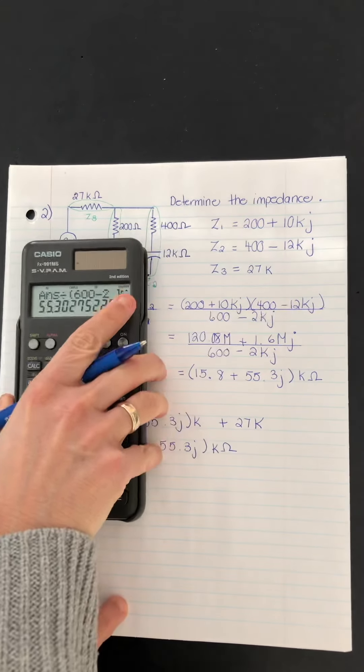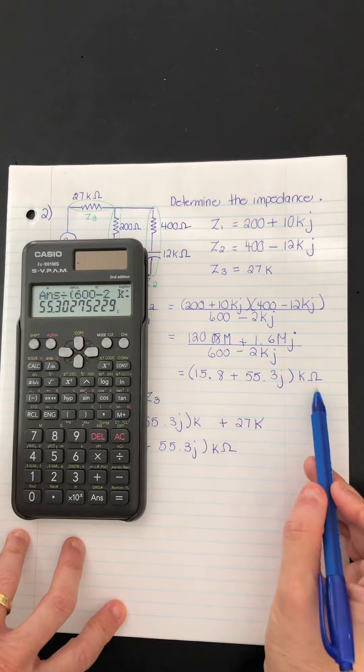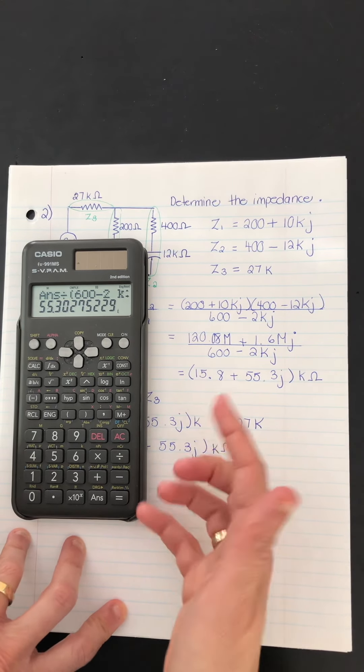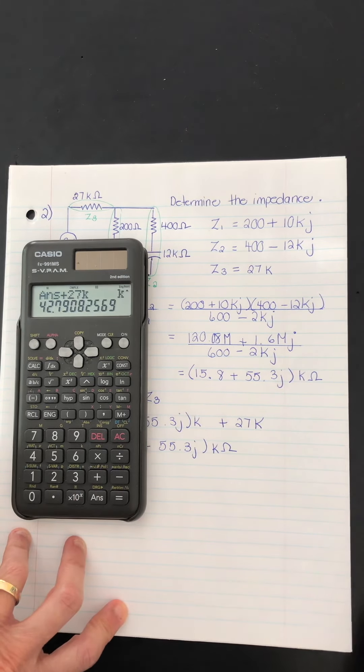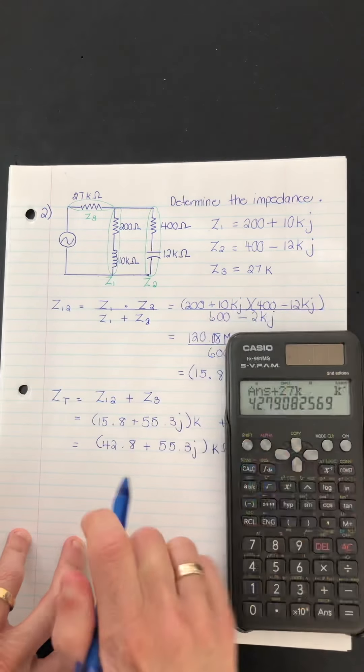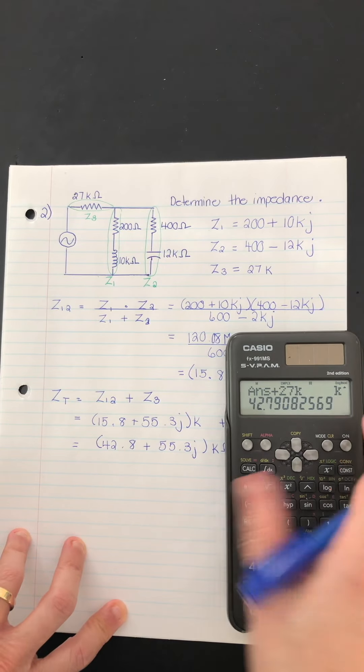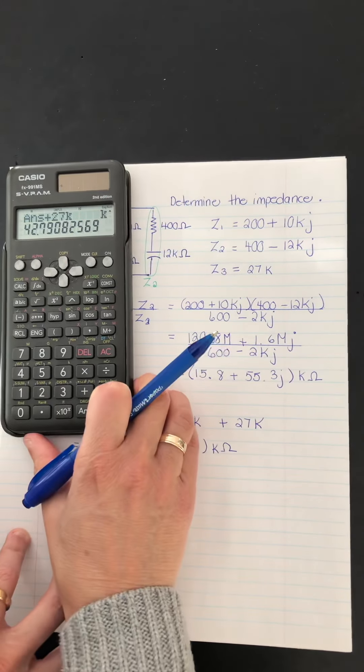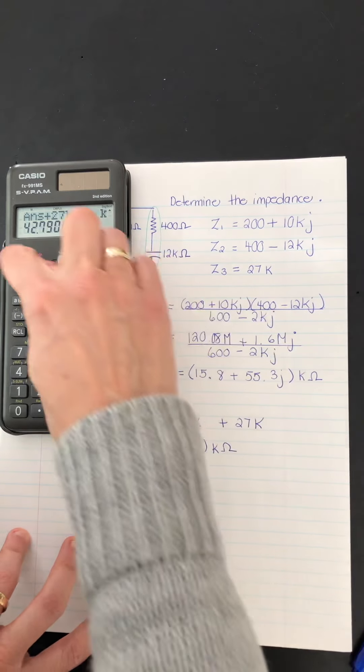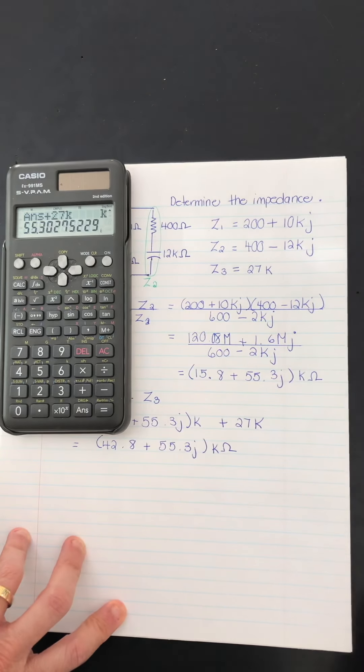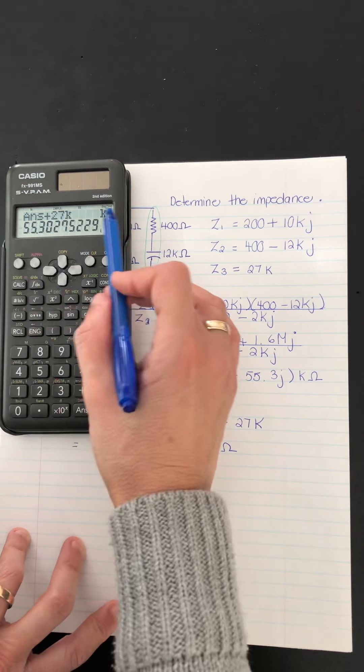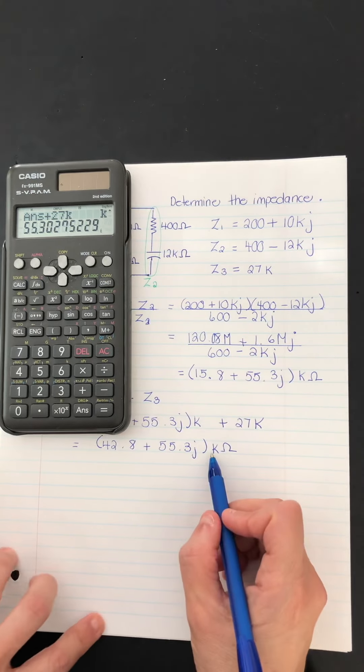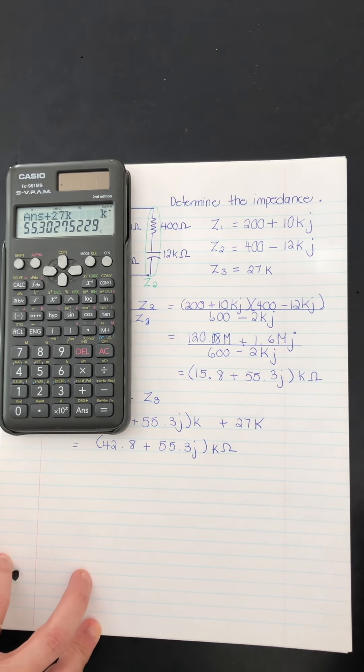So if I wanted to do it on my calculator, remember I didn't clear my calculator after this last step. So I'm just going to do plus 27 kilo. So there it is. There's the 42.8 kilo. And then I'm going to do the shift equals. So that's this part right here, the imaginary part, 55.3 kilo with the I on it. And if I want to go to polar form with that, I can do that here as well.